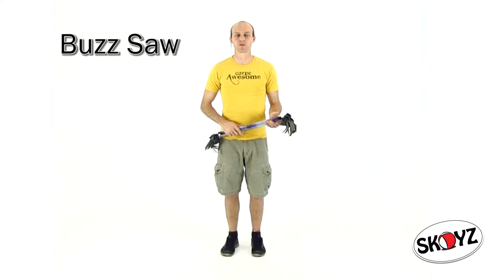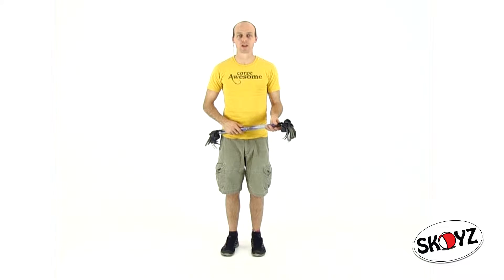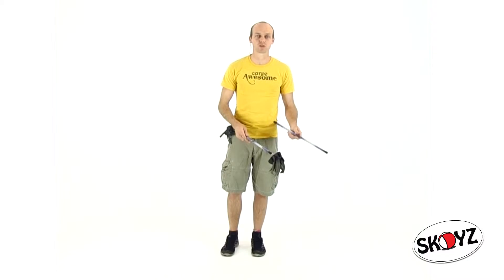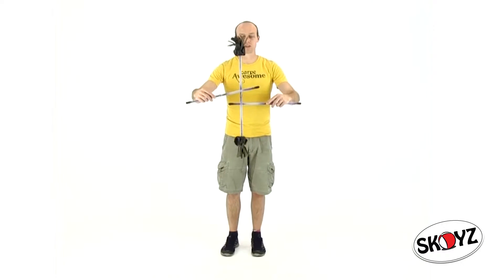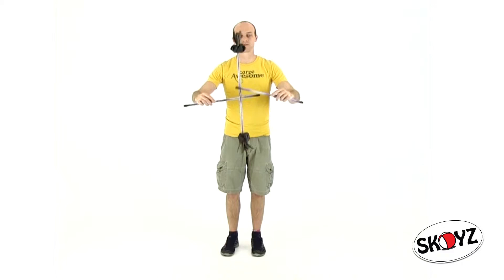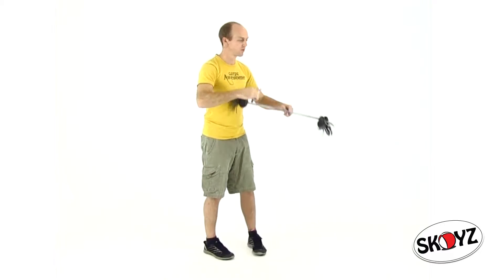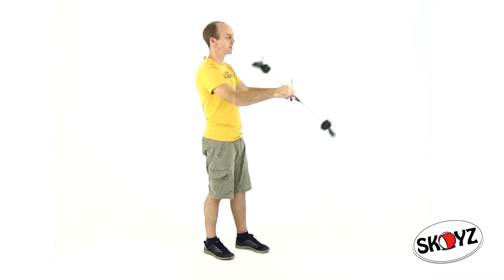Now we're going to talk about the buzzsaw, and this is one of those moves that everybody has seen a stick player do and is a stereotypical type of move. From the front, it looks like this. From the side, it looks like this.